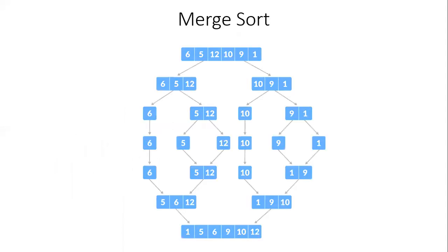The next and last example is merge sort. Merge sort is based on the principle that it can be applied to two sorted lists. If you have a list with a single element, it is obviously sorted — no sorting needed. If you have more than one element, you need to apply sorting.